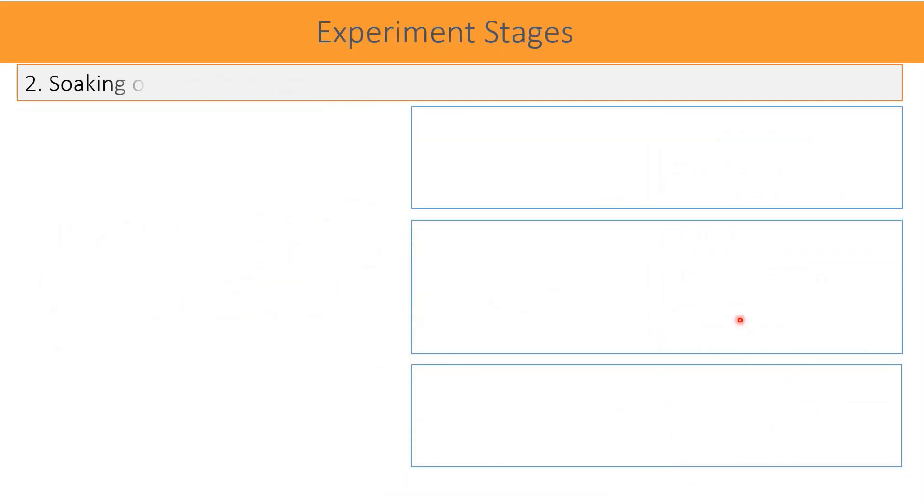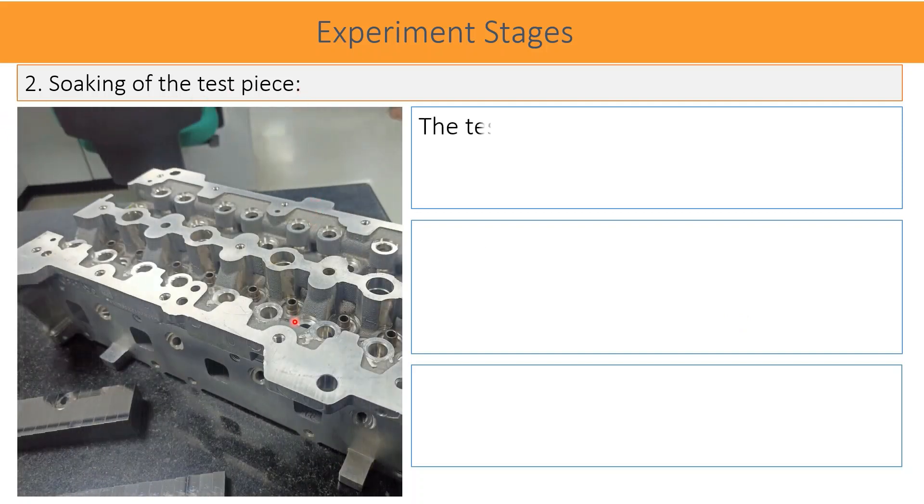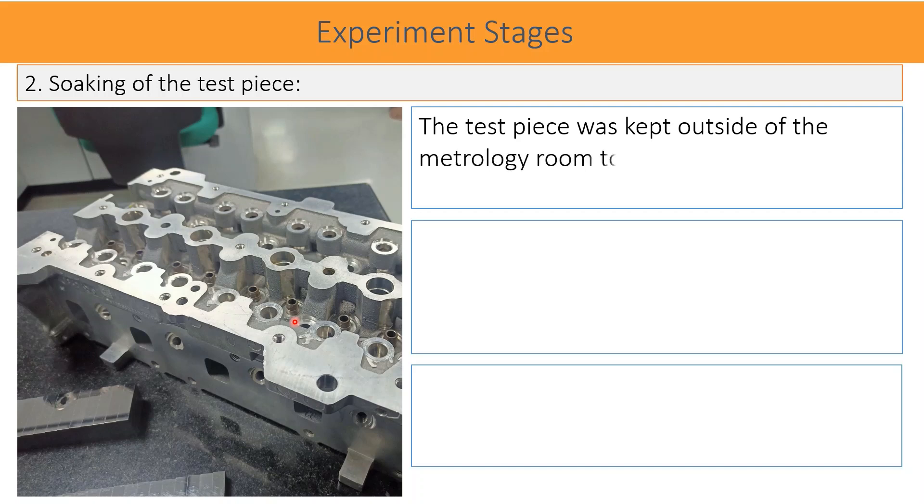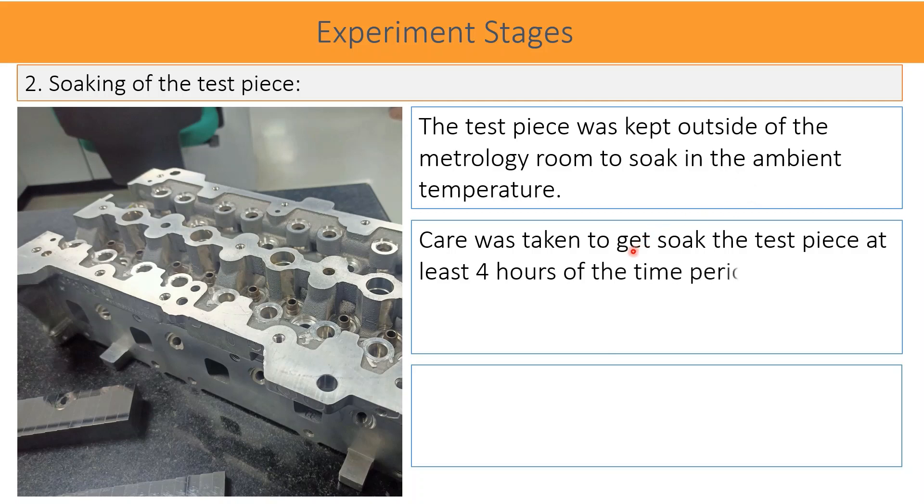Soaking of the test piece. The central theme of this experiment is to bring the part from the machine shop after machining into the CMM room and evaluate the temperature soaking time. To replicate the process in this experiment, the test piece was kept in the ambient temperature outside the CMM room, exposed to normal environment. The part was allowed to soak at least 4 hours before taking it inside the CMM room to start the measurement.